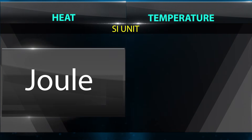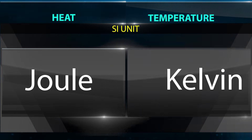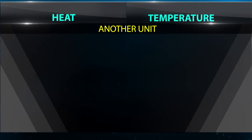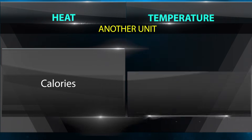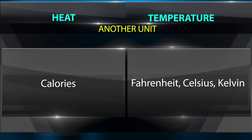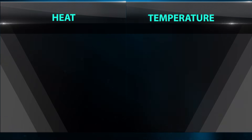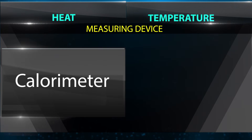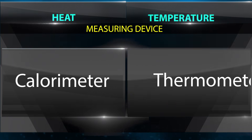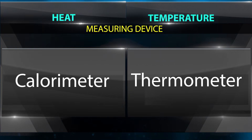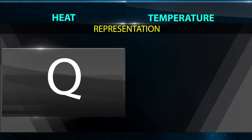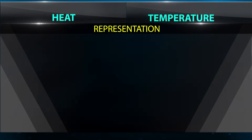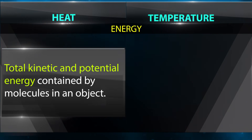SI unit of heat is Joule; SI unit of temperature is Kelvin. Another unit of heat is calories; other units for temperature include Fahrenheit and Celsius. Measuring device of heat is a calorimeter; measuring device of temperature is a thermometer. Heat is represented by Q; temperature is represented by T.